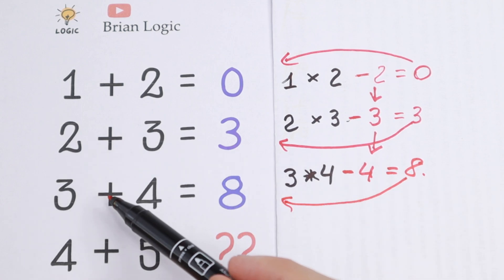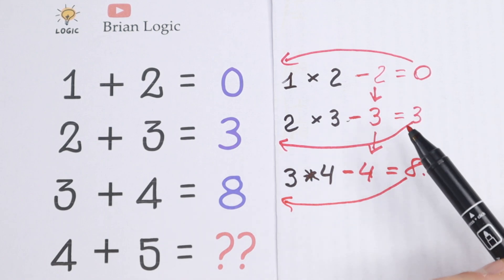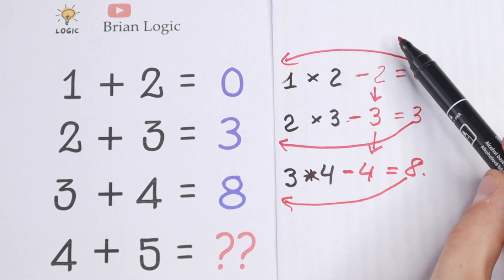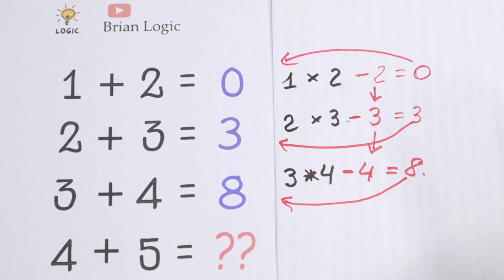So firstly, we need to change addition by multiplication. And secondly, we need to subtract like a natural order, but not from 1, 2, 3, 4, but from 2, 3, 4. And it's not hard to see that we can use this pattern in the last row.